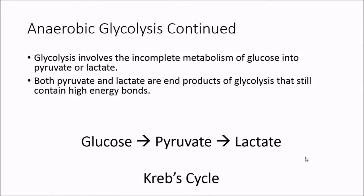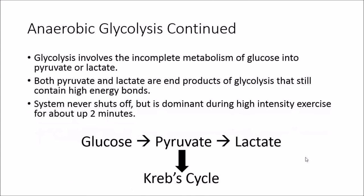As we consume glucose, it will be converted into pyruvate through glycolysis. Pyruvate can either go to lactate or into the Krebs cycle — our aerobic metabolism or oxidative phosphorylation. The glycolysis system never shuts off; it's always working no matter what. It will just be dominant at certain periods, specifically during high-intensity exercise in the first two minutes.